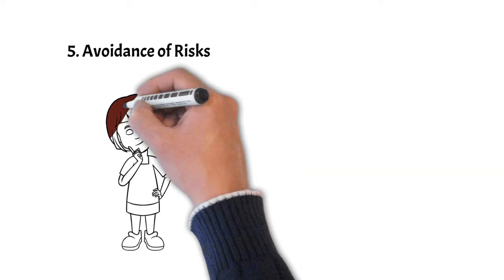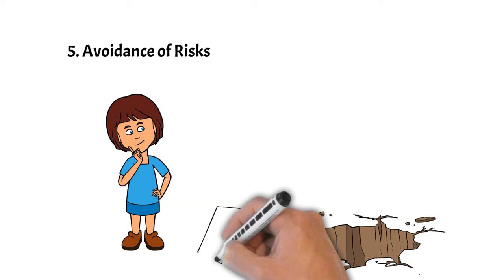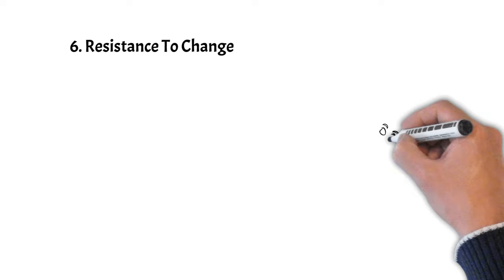Number 5: Avoidance of Risks. Type 6s usually avoid taking risks due to their fear of negative outcomes, which can be limiting in personal or professional settings and frustrating for more adventurous types.